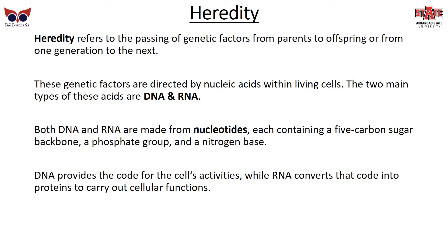Let's begin with heredity. Heredity refers to the passing of genetic factors from parents to offspring, or from one generation to the next. These genetic factors are directed by nucleic acids within living cells, and the two main types are called DNA and RNA. Both DNA and RNA are made from nucleotides, and each contains a 5-carbon sugar backbone, a phosphate group, and a nitrogen base. DNA provides the code for the cell's activities, while RNA converts that code into proteins to carry out those cellular functions.